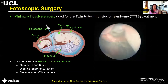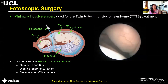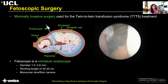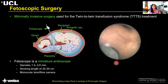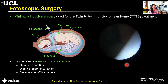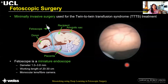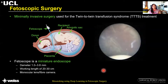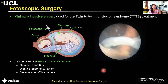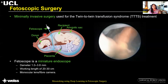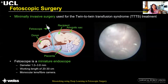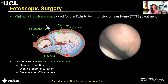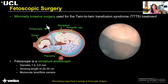Fetoscopic surgery is a minimally invasive surgery used for the treatment of twin-to-twin transfusion syndrome. It is also used for taking biopsies or for the treatment of spina bifida. A fetoscope is a miniature endoscope with a very limited field of view, a small form factor, a working length of about 20 to 30 centimeters, and it contains a monocular camera. It is inserted through the abdominal wall into the uterus and the amniotic sac, giving access to the fetal side of the placenta.